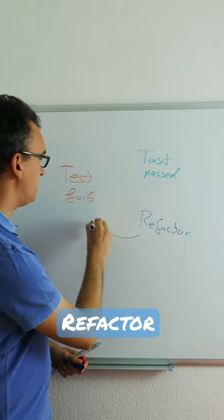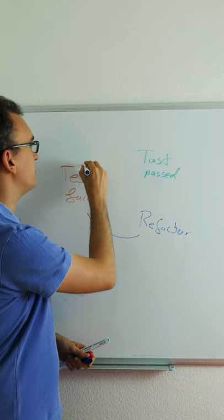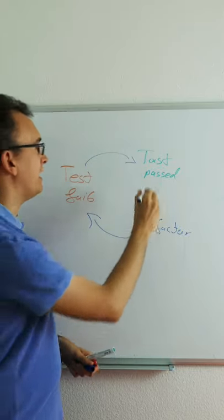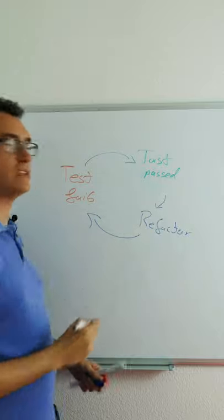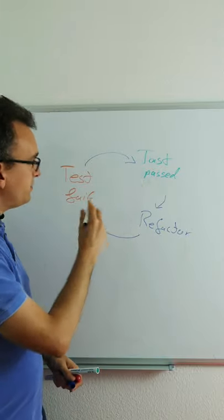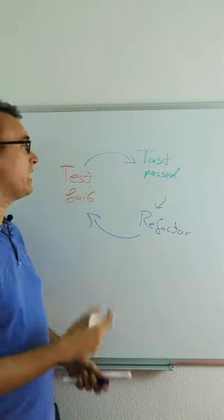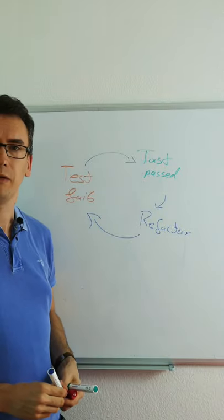After the refactoring, you destroy your test again. After you have destroyed your test, you make it run, and after that, you refactor your code so it looks nice. These are the three steps that you have to do in a cyclic way, and that's test-driven development.